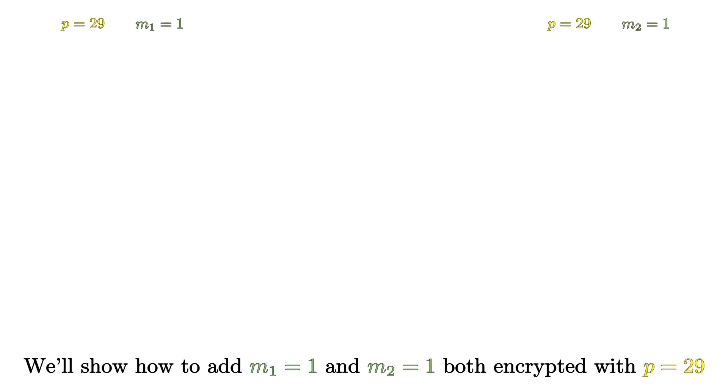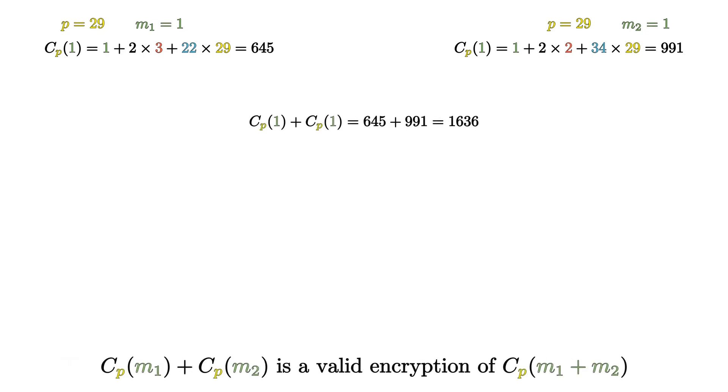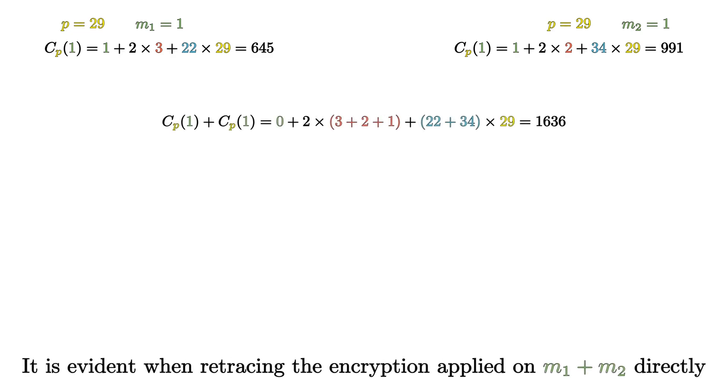Addition works intuitively. Let's say that we have c(m1) and c(m2), the encryptions of two messages, but we don't know the secret key p. We can still compute a valid encryption of m1 plus m2, albeit with more noise, by adding together the encryptions of the two messages that we have available. We can verify it by retracing the encryption as if it was applied to m1 plus m2 directly.